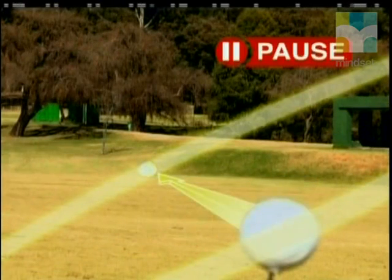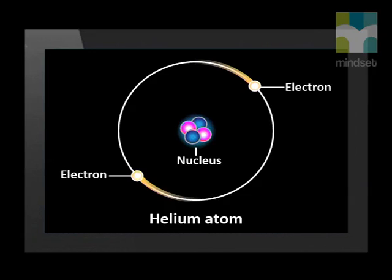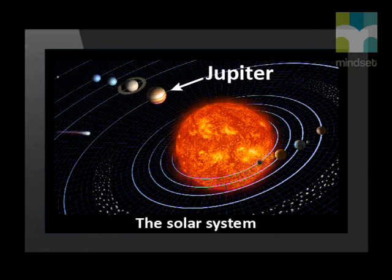Do you see that the space between the electrons and the nucleus is huge? In comparison, the nucleus is very, very small. Use this model to predict what would happen to most of the alpha particles fired at the gold foil. Most of the alpha particles will pass between the nucleus and the electrons without being deflected or scattered — there is a lot of empty space inside the atom. In Rutherford's atomic model, he proposed that the electrons move around the nucleus, similar to the way that the planets orbit the Sun in our solar system.